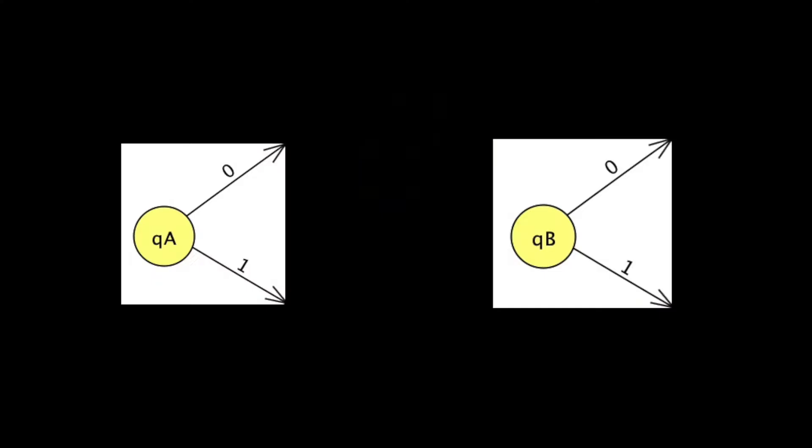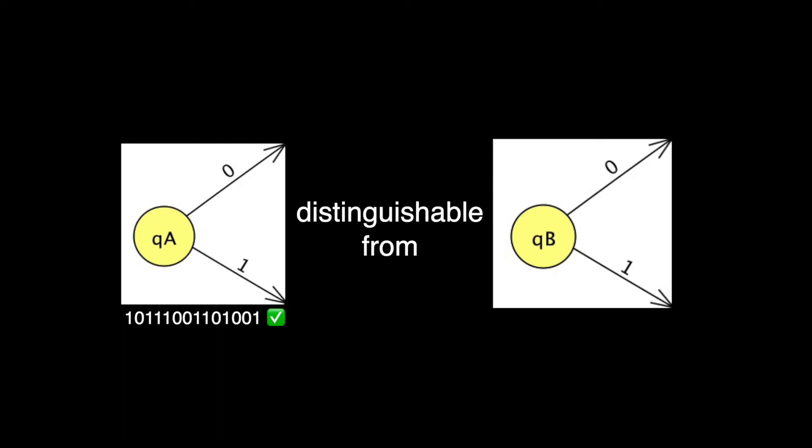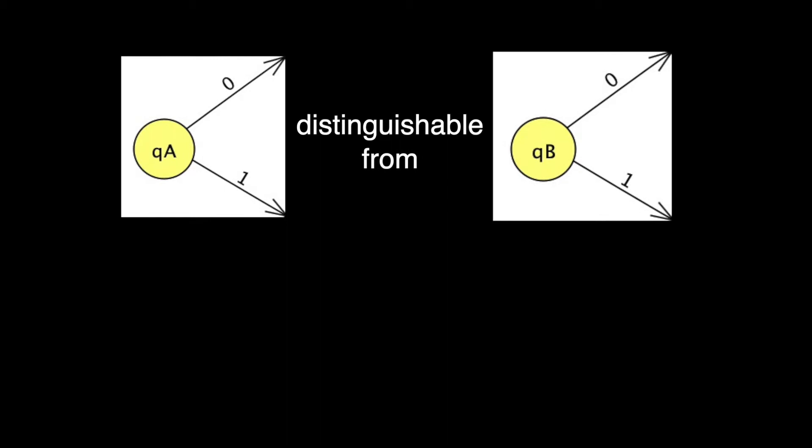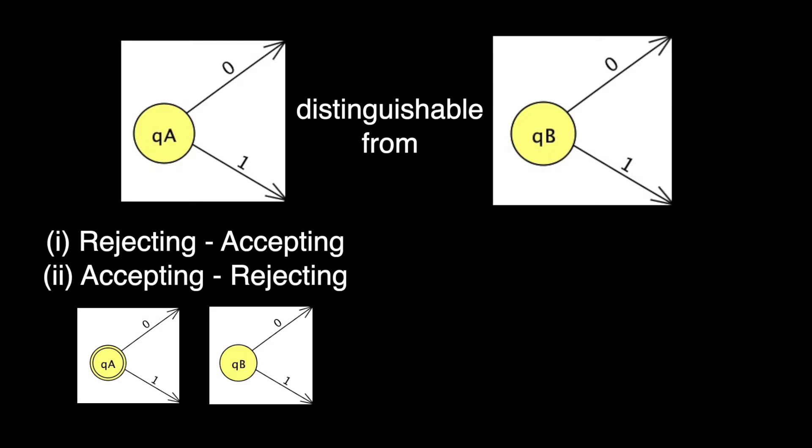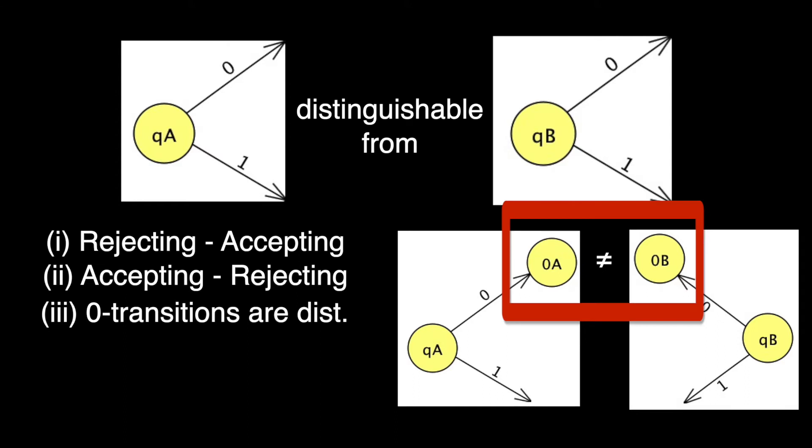Two states are distinguishable if there exists a possible input sequence such that one of these states will be accepting and one will be rejecting. In other words, two states are distinguishable if and only if the two states are rejecting-accepting, accepting-rejecting, or the states on their zero transitions are distinguishable, or the states on their one transitions are distinguishable.